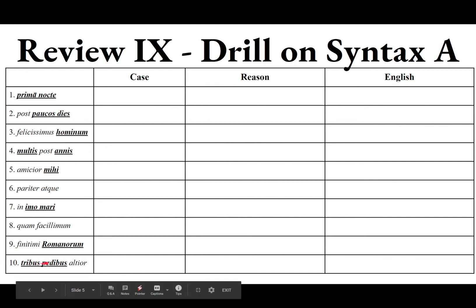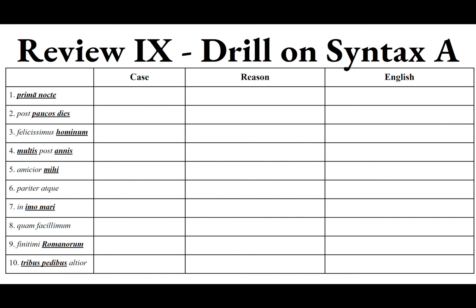Number ten: tribus pedibus altior. Altior means 'taller' — it's the comparative of altus a um. By what degree of difference? By tribus pedibus — ablative of degree of difference, by three feet. Taller by three feet; that's the degree of difference between one person and another. Optime — very well done.